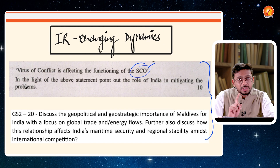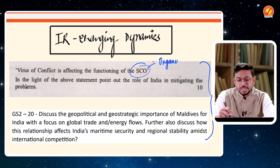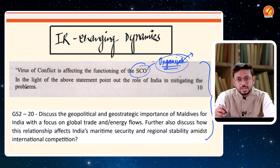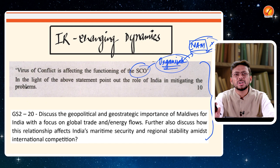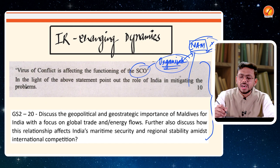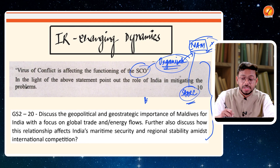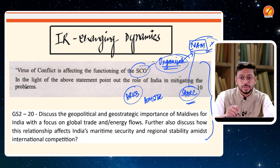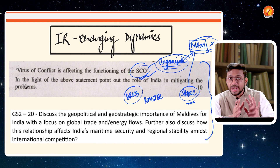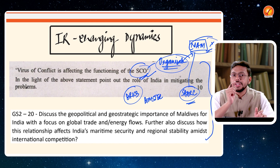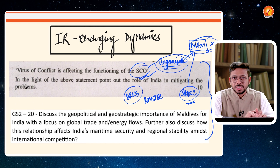Questions came on the SCO organization. You need to keep in mind which organizations India is actively part of. NAM — India is not taking an active role now. SAARC — India is not very active there. But BIMSTEC, BRICS, SCO — India is definitely active. The organizations where India is active and which serve India's interests have to be in your radar to understand what kind of questions can come.